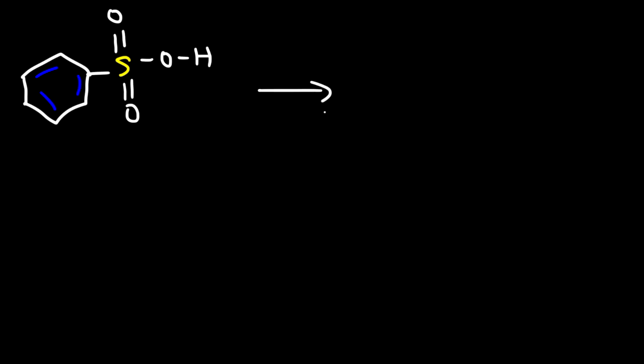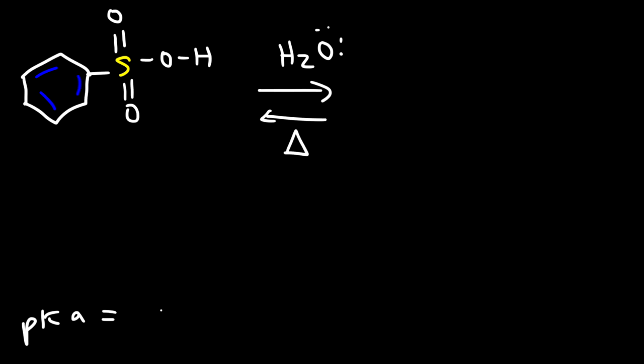Now let's talk about the desulfonation mechanism of benzene sulfonic acid. In order to remove the SO₃H group, we need to use a solution that has a very high concentration of water and a low concentration of sulfuric acid — or some acid in general. Since the concentration of water is high, water is going to act as a weak base, and of course we need to heat the solution. Benzene sulfonic acid is a very strong acid — in fact, the pKa is very low, in the negatives, like negative 6.5.